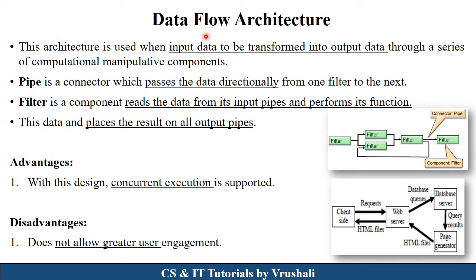The next type of architecture is data flow architecture. The name suggests that they handle complete input data that is transferred into output data flow for a particular product. In this diagram, the lines are called pipes (connectors) and filters are called components, showing the complete flow of the system. Pipes pass data directionally in input-to-output form, and filters perform different actions, functions, and manipulations. The best example is Google search engine — a client searches something, the request is sent to the web server, the web server checks the query in the database, and the database displays the results.